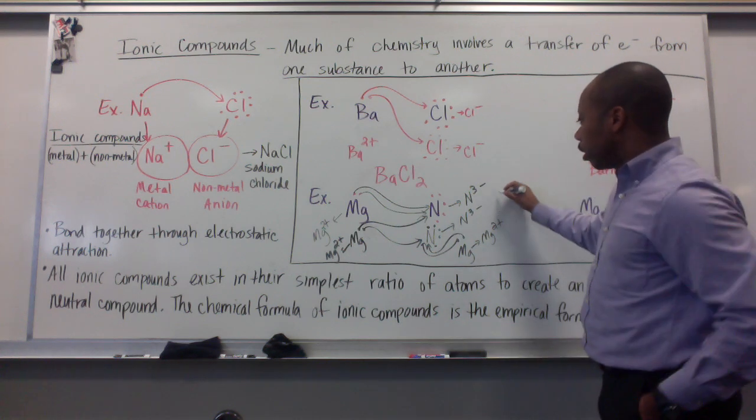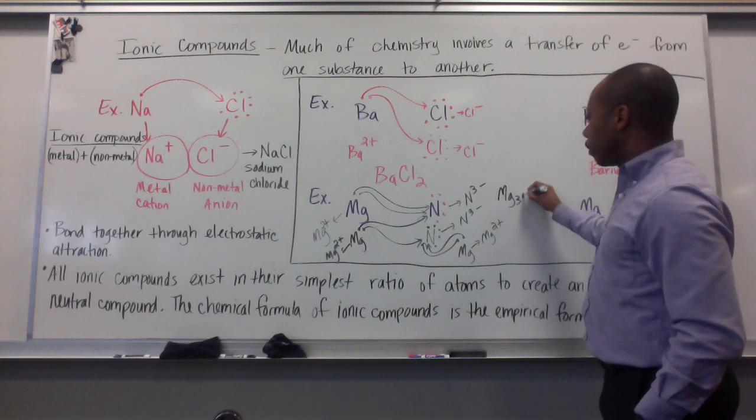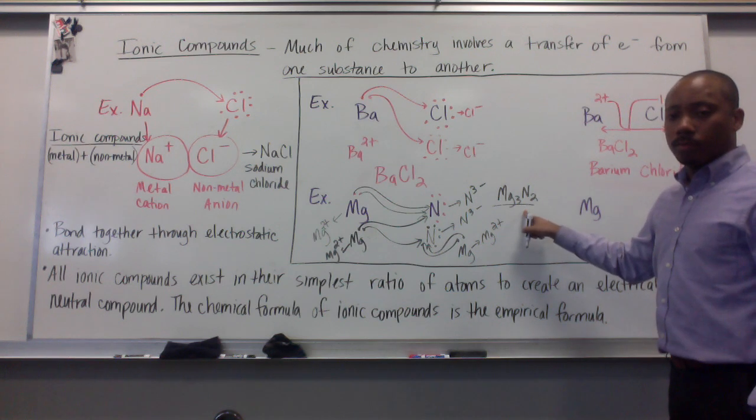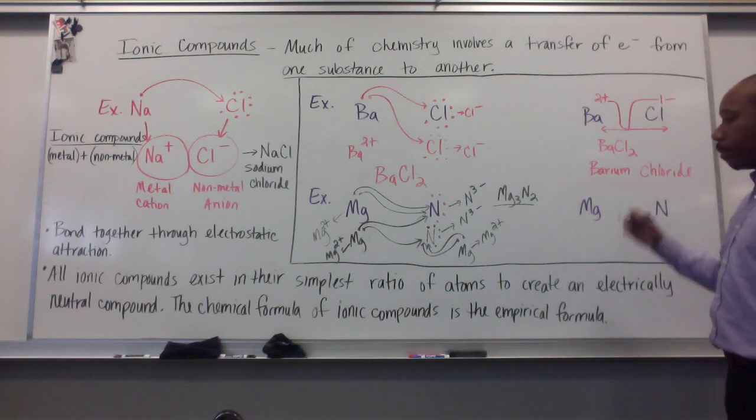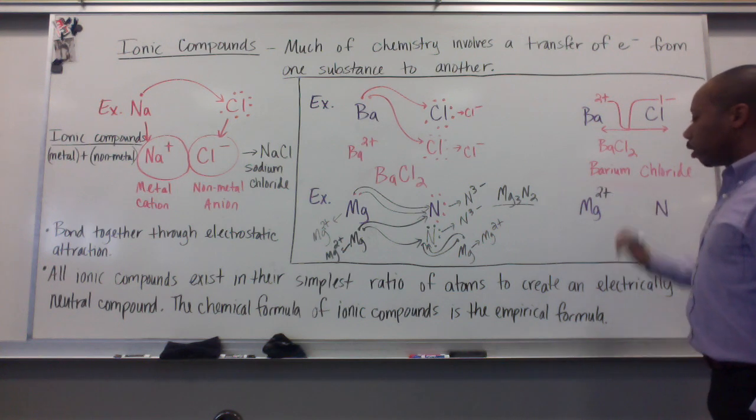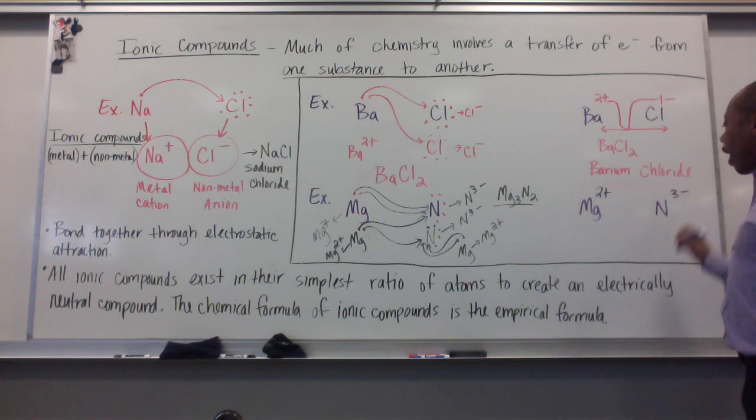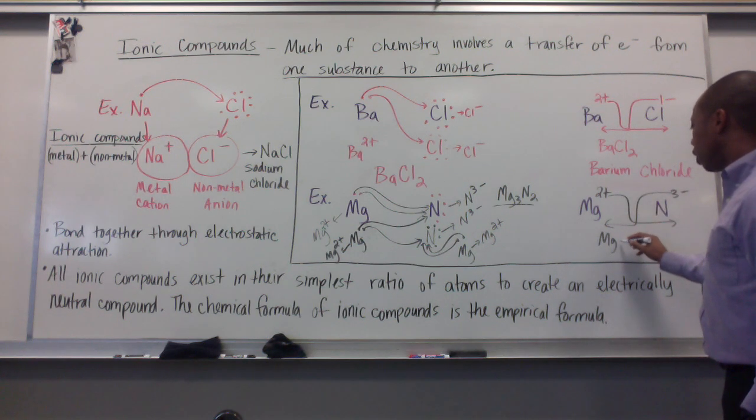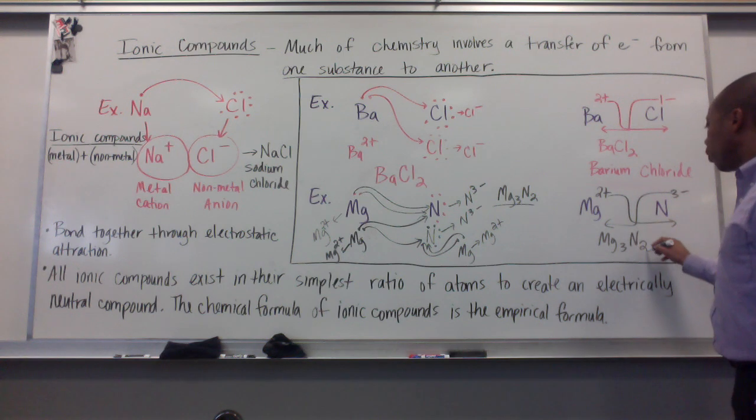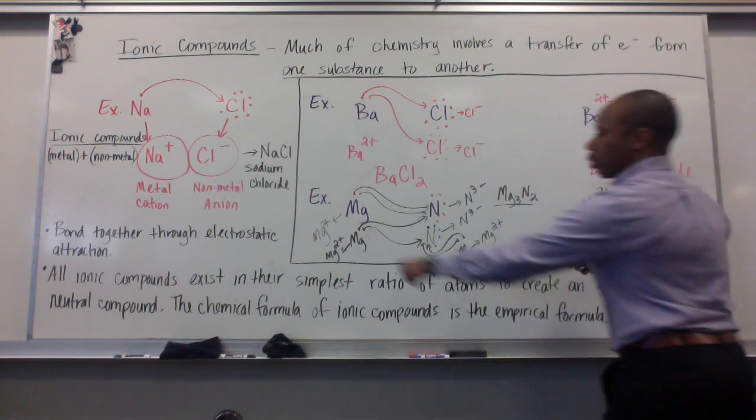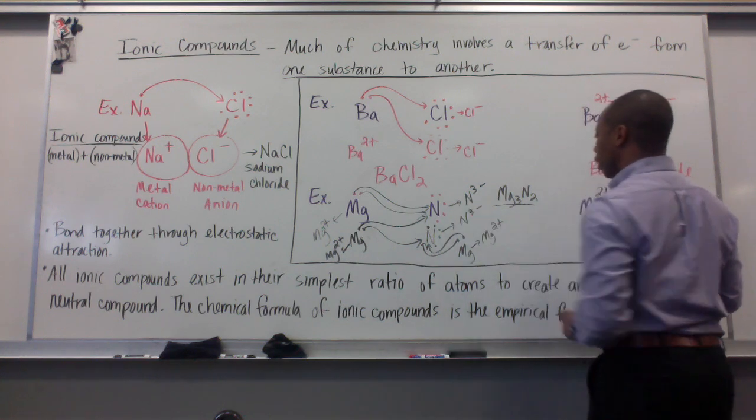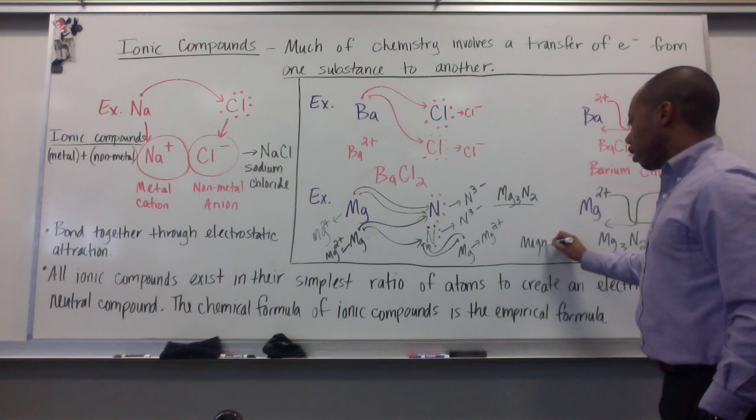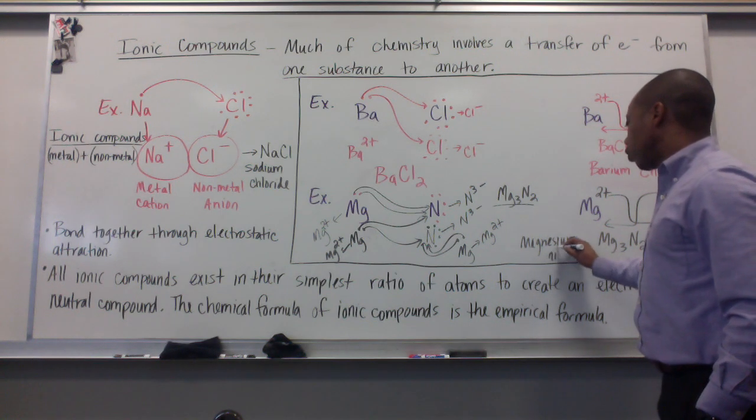So we get three magnesium ions and two nitrogen. If we go over here and do our crossover method to make it simpler, we know magnesium is going to form a two plus ion. Nitrogen is going to form a three minus ion. Crossover method. The two goes here, the three goes there. We have Mg3N2. Exactly what we have here, three magnesiums for every two nitrogens. And we call this magnesium nitride.